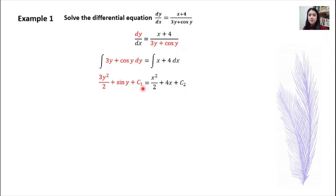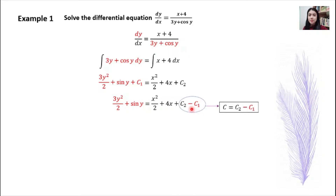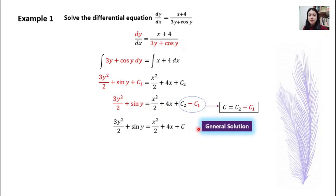You can see I'm using c1 for the left-hand side and c2 for the right-hand side because they are two different constants. Then rewriting this line, the right-hand side has plus c2 minus c1. Since c2 is a constant minus another constant c1, the result is still a constant, so we replace them with a single constant c. This gives us the general solution for this differential equation.